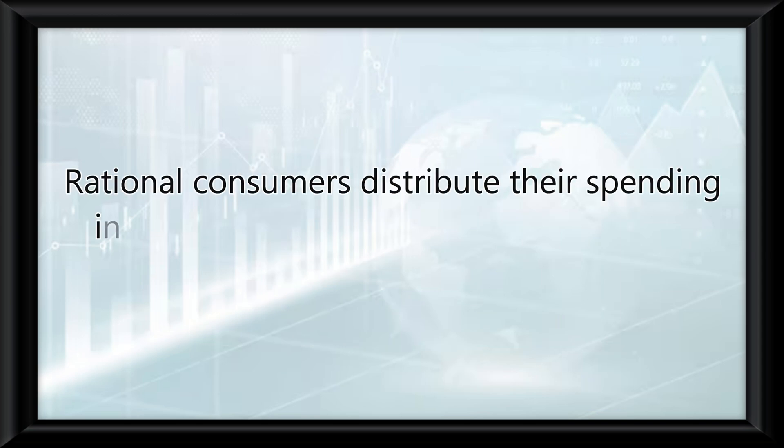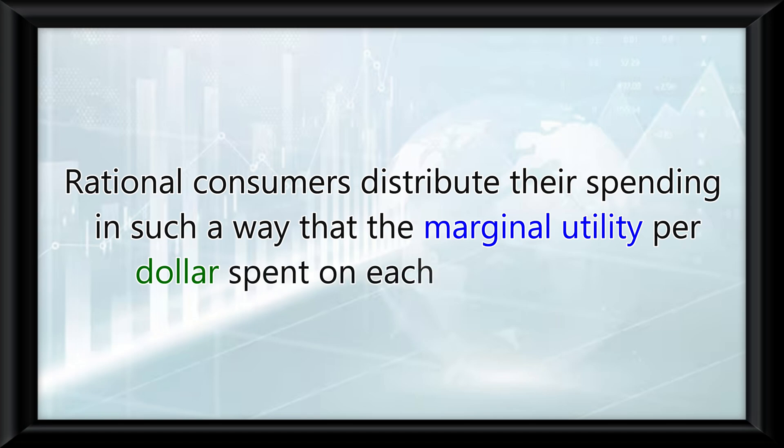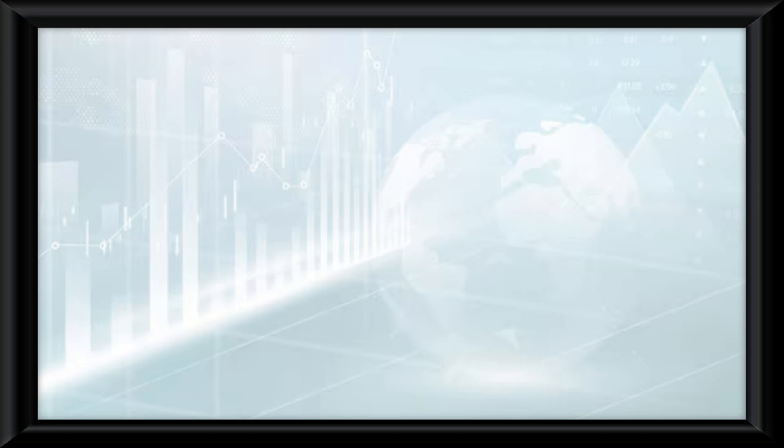Rational consumers distribute their spending in such a way that their marginal utility per dollar spent on each good is equal. The best way I think I can describe this is by using a table.